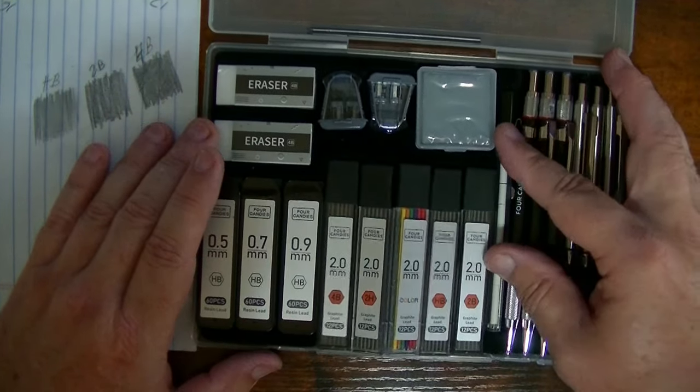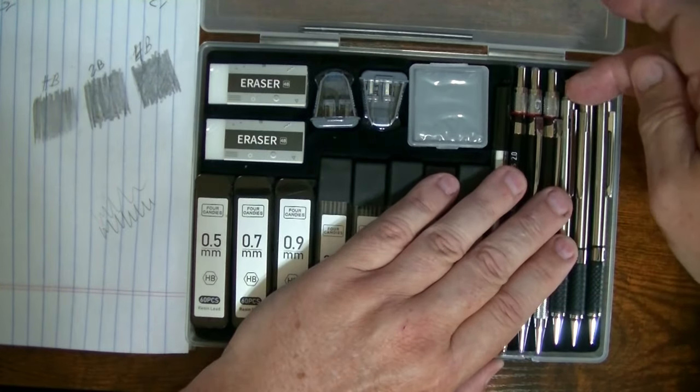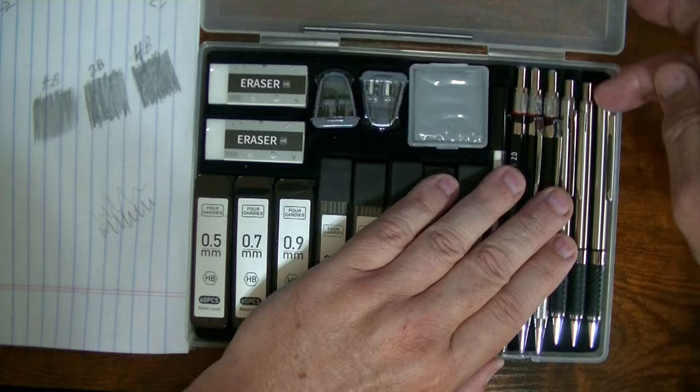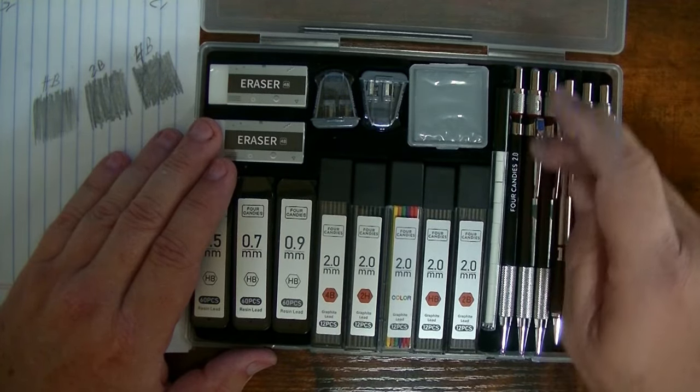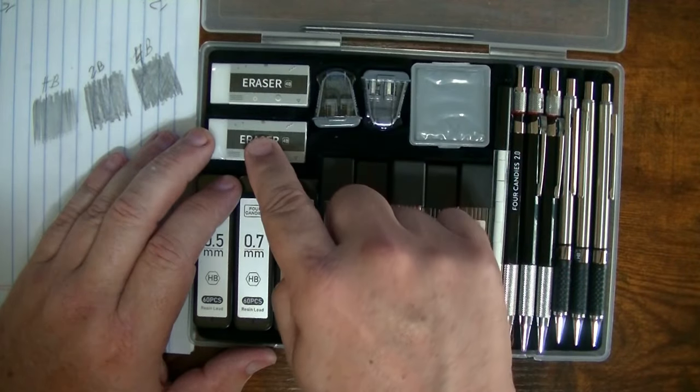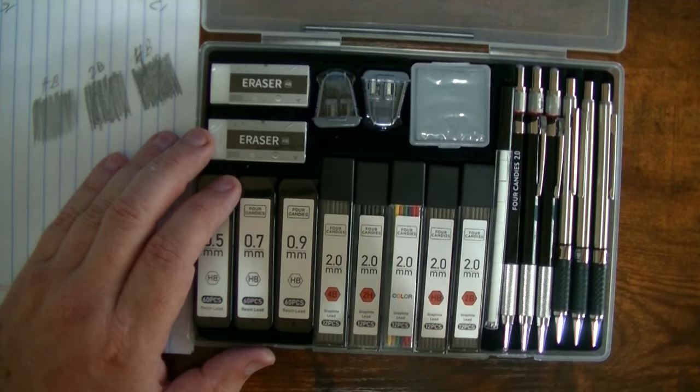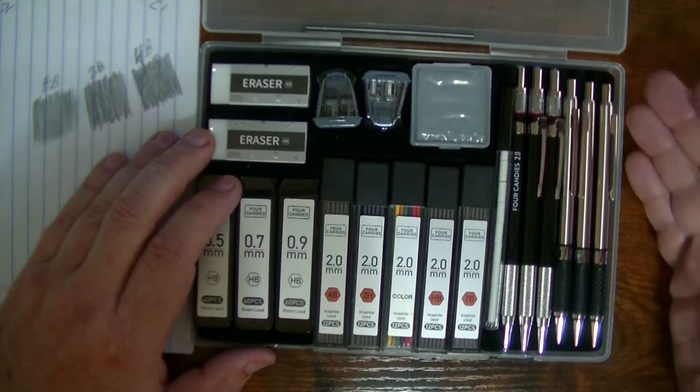So the erasers, these little erasers right here are for these three right here. The 0.5, 0.7, 0.9. The 2.0s apparently do not have an eraser. You can use these erasers, of course. And there's the kneaded eraser you use for everything.